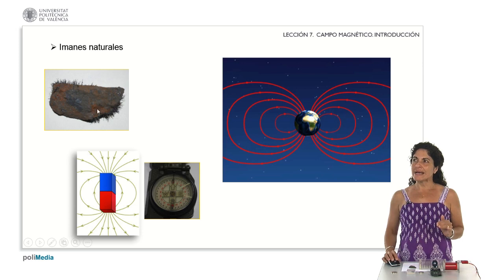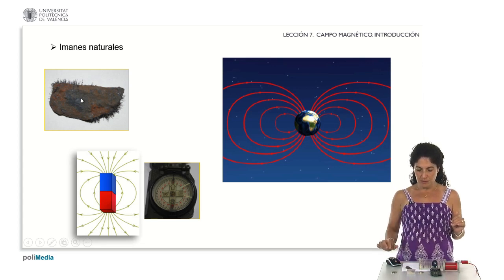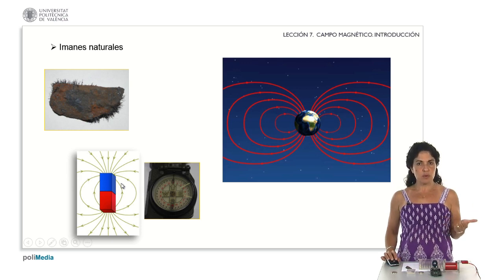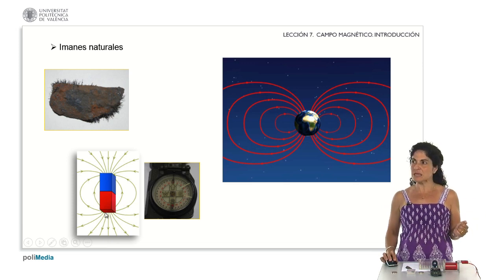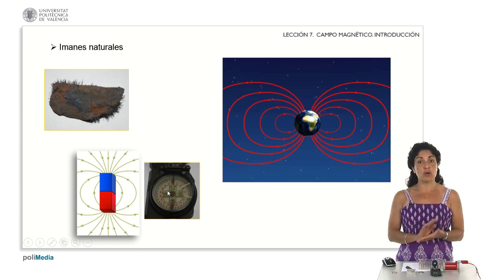They also observed that the attraction these minerals experienced was governed by certain field lines. As with positive and negative charges, it turns out that one part of the magnet attracted and another part repelled. I have brought a small piece of magnetite here for us to see. Those interactions could also be studied using compasses — we know that compasses are formed by magnetized needles that orient themselves according to the terrestrial magnetic field.